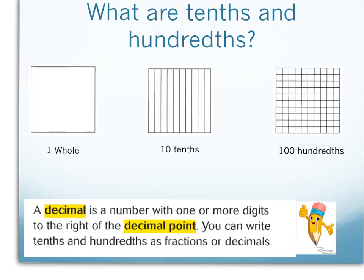What are tenths and hundredths? Tenths and hundredths are decimal amounts, or fraction amounts, representing less than one whole. If my square represents one whole, my square cut into ten pieces represents ten tenths. Shading in one of those pieces gives me one tenth as a fraction, or one tenth, zero point one, as a decimal.